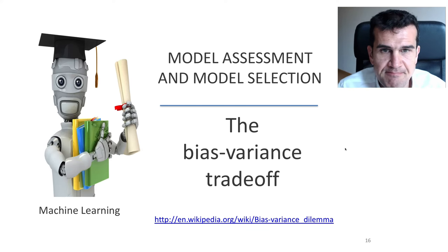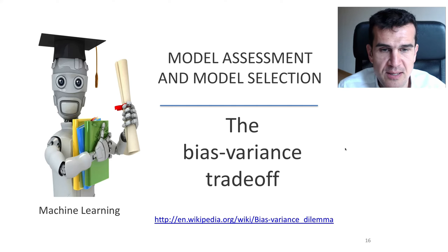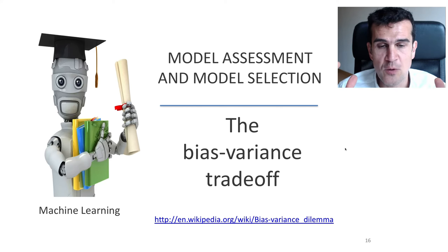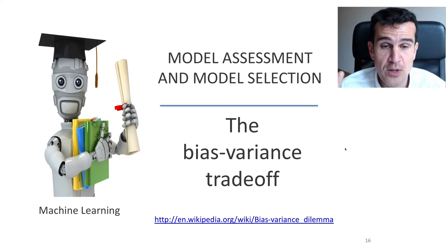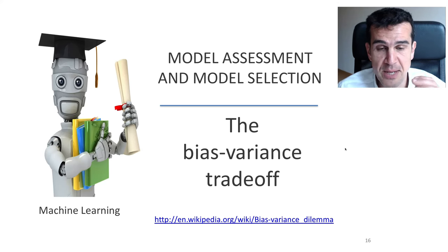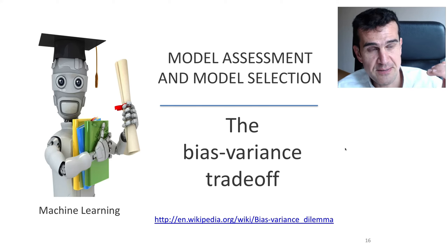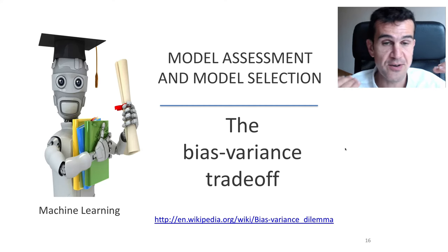Hi, guys. In this video, we're going to learn about the bias-variance trade-off. This is a dilemma that is really important in machine learning. It basically means that both bias and variance are two components of the test error — the error we make when we predict on new data, the error we want to minimize. We would like to minimize both, but that's not going to be possible. If we want to reduce the variance, it's going to be at the expense of increasing the bias.